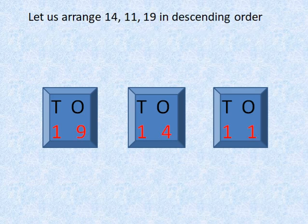Let us arrange 14, 11 and 19 in descending order. That is 19, 14 and 11.